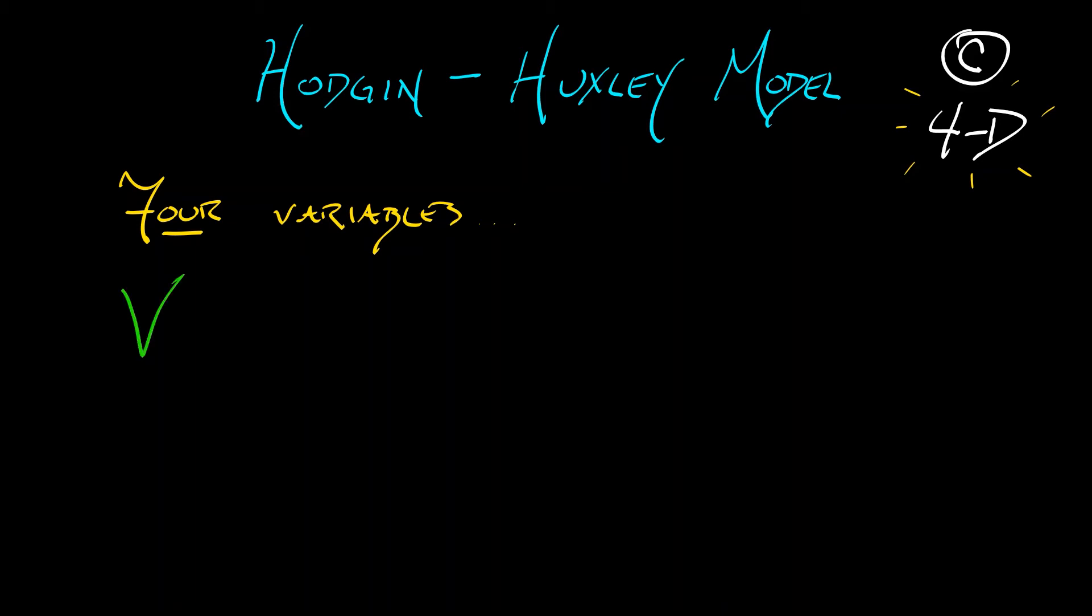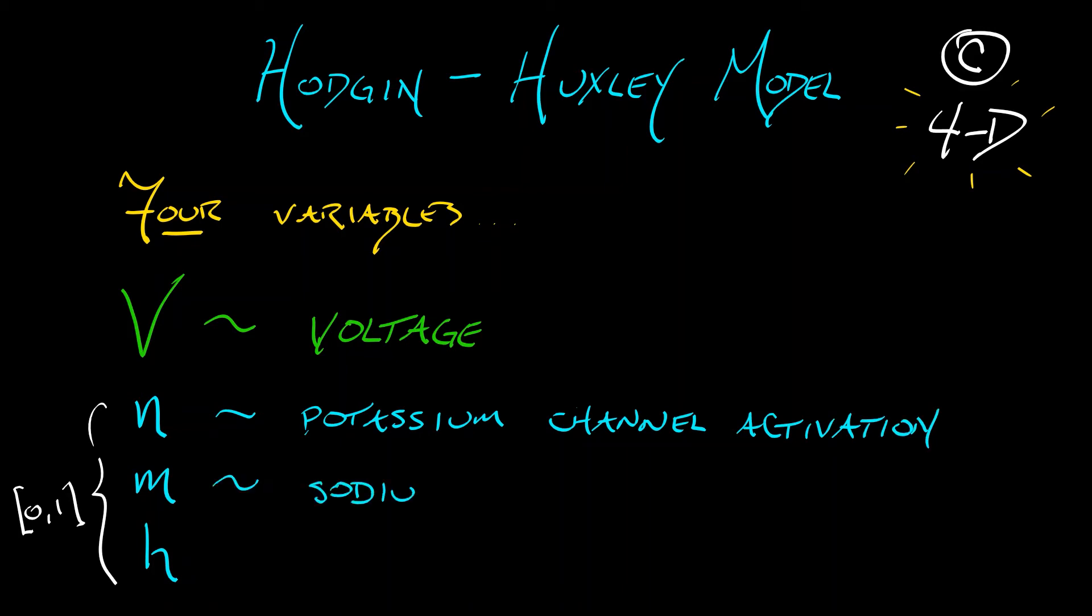We have V, which is just like in FitzHugh-Nagumo, a voltage across a membrane. Then we've got a couple of others that really dig into the electrochemical activity. We have N, M, and H. These are all between 0 and 1, corresponding to concentrations, specifically a potassium channel activation, a sodium channel activation, and a sodium channel inactivation for N, M, and H, respectively.